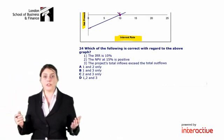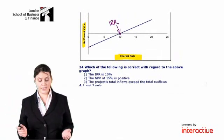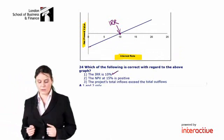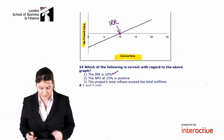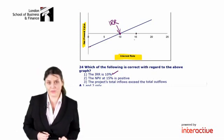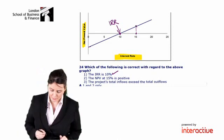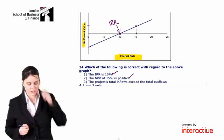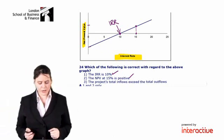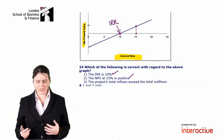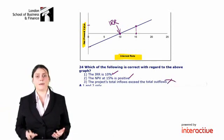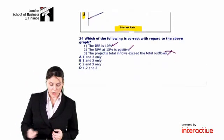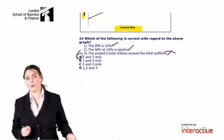Which of the following is correct with regard to the above graph? The internal rate of return is 10%. Is that true? Yes, it is. When the NPV is 0, our interest rate is clearly 10%, so that is correct. The NPV at 15% is positive. Well, here's 15%, and we can see that our NPV line is above the x-axis. It's a positive figure, so this statement is correct. Number three, the project's total inflows exceed the total outflows. Well, it depends on the interest rate, doesn't it? So the third statement is not correct. So the correct answer is A. Numbers 1 and 2 are correct.